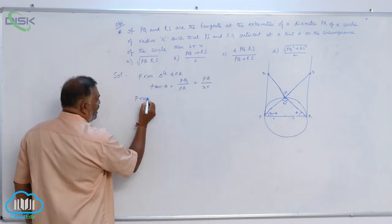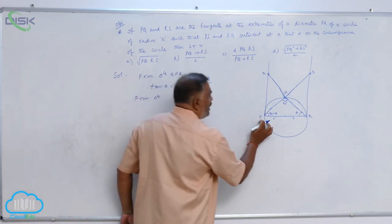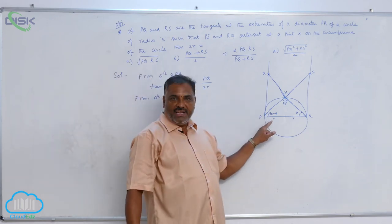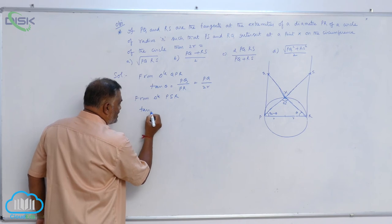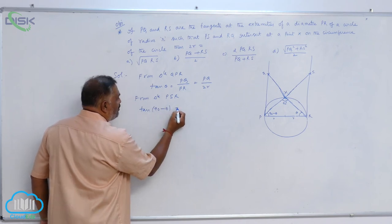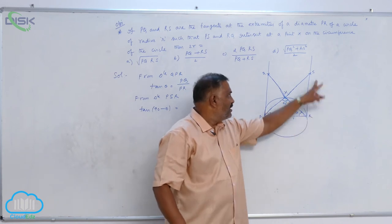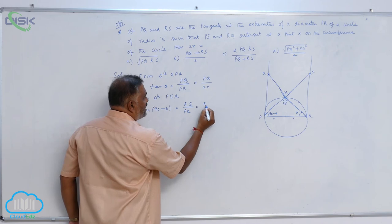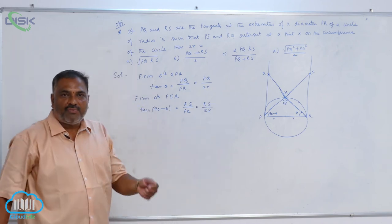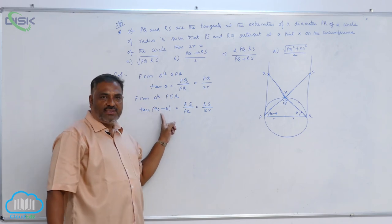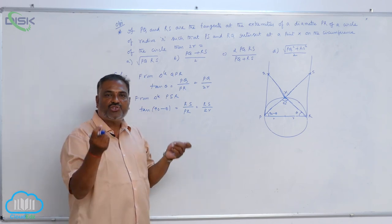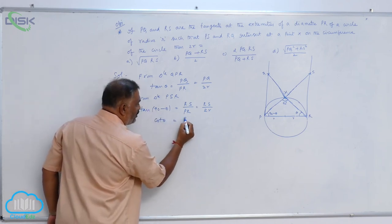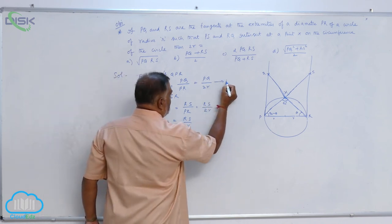Again, from triangle PSR, the angle is 90 minus theta. Tan 90 minus theta is equal to - tan 90 minus theta belongs to first quadrant. So, tan 90 minus theta will become cot theta is equal to RS by 2R. Now, call this equation 1, equation 2.